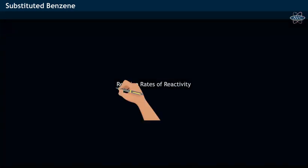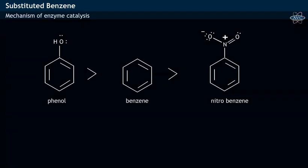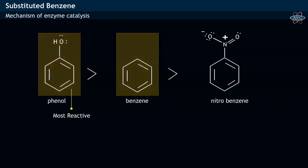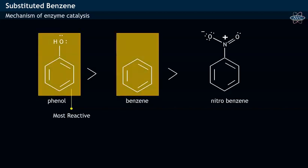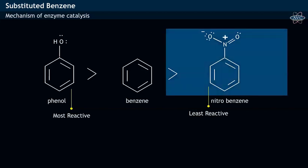Let us study the relative rates of reactivity of benzene and other substituted benzenes towards electrophilic aromatic substitution. Among the three compounds shown, phenol is most reactive compared to benzene, while nitrobenzene is least reactive.